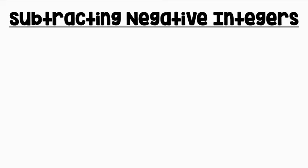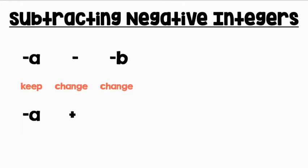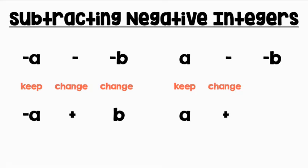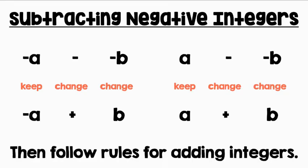We will use the additive inverse to subtract negative integers. If we have two integers, negative A minus negative B, we will keep negative A, change subtraction to addition, and change negative B to positive B. Then we will follow the rules for adding integers.